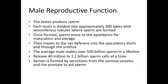Let's talk about reproduction. For male reproduction, the testes produce sperm — each testis is divided into about 300 lobes consisting of seminiferous tubules, where sperm form. Once formed, sperm move to the epididymis for maturation and storage. When males are ready to release sperm, it moves to the vas deferens into the ejaculatory ducts and then out the urethra.